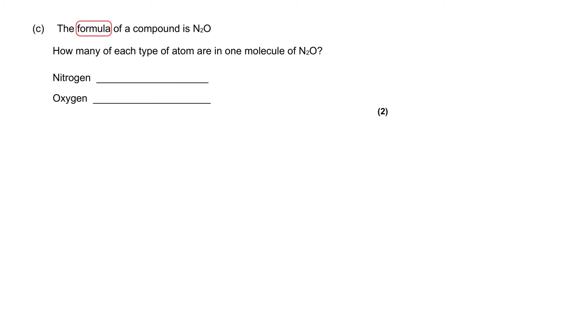The formula of a compound is N2O. How many of each type of atom are in one molecule of N2O?